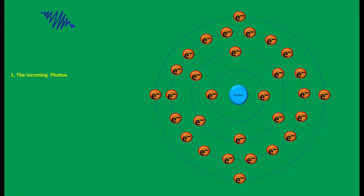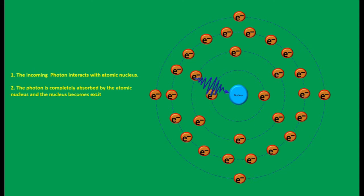The incoming X-ray or gamma ray photon interacts with nucleus of atom. The photon is completely absorbed by the atomic nucleus and the nucleus becomes excited. The nucleus de-excites by releasing neutron or proton or nuclear fragment.